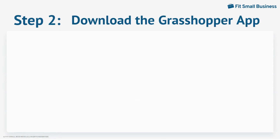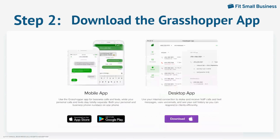Grasshopper offers desktop apps for Mac or Windows computers, which are downloadable through its website. For mobile applications, head to the Google Play or the Apple App Store to download iOS and Android applications. Once downloaded, you can sign into your Grasshopper account using your username and password. You'll need to enter your mobile number to register your cell phone as a trusted device and choose an extension to use for outbound calls.